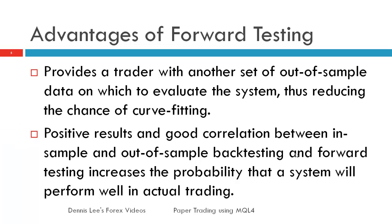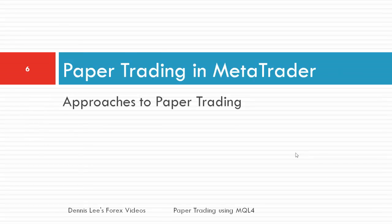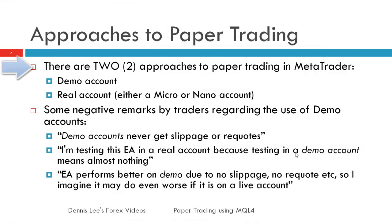We will discuss out-of-sample data and curve fitting in another video. Next, we will take a look at different approaches to forward testing, also known as paper trading. There are two approaches to paper trading in MetaTrader. The first is the use of a demo account, which is inexpensive as no money is required to fund the account. The second approach is to use a real account, which is expensive as you are required to fund the account with your own money; however, you can use a micro or nano account to lower the funding cost.